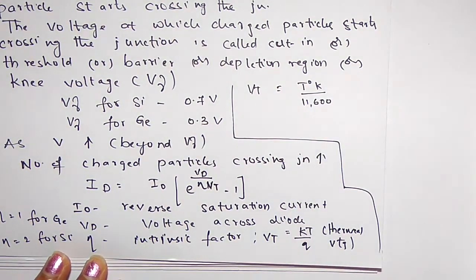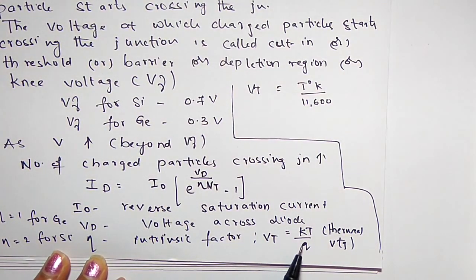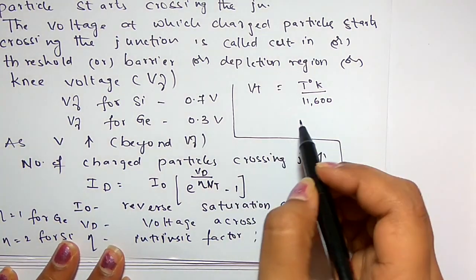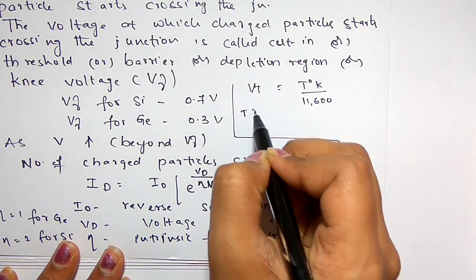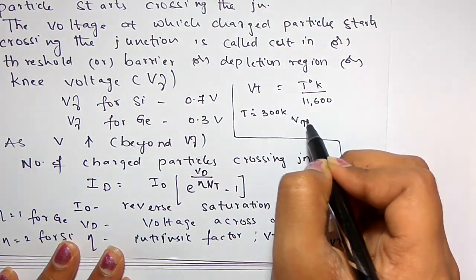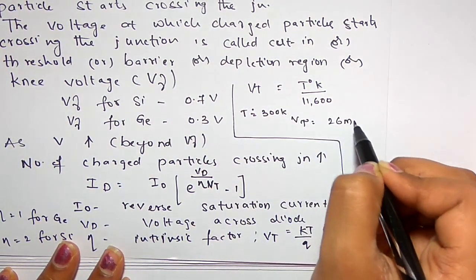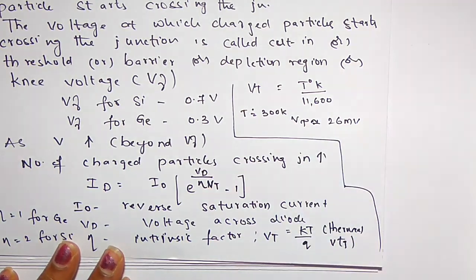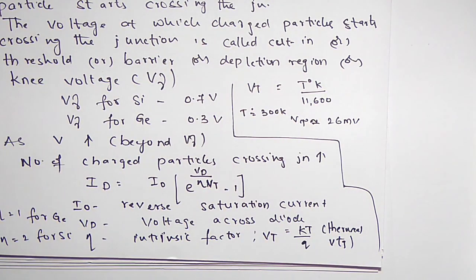K by Q is written as 1/11600. If the temperature is 300 Kelvin, then Vt is approximately equal to the voltage equivalent of temperature, which is 26 millivolts. This concludes the topic of forward biasing.